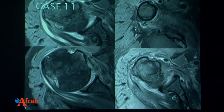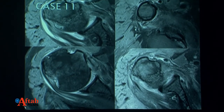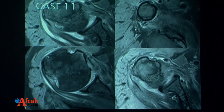Regarding biceps tendon subluxation: the transverse humeral ligament bridges across the biceps tendon. Whenever there is a partial or complete subscapularis tear, there is a high chance of transverse humeral ligament injury, and in that situation the biceps tendon moves out of the groove and lies medially — this is biceps tendon subluxation. Its presence should prompt you to report both a tear of the transverse humeral ligament and an associated partial or full thickness subscapularis tear. This can occur with trauma and also in inflammatory arthritis.